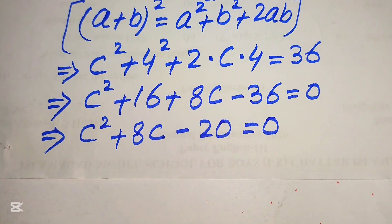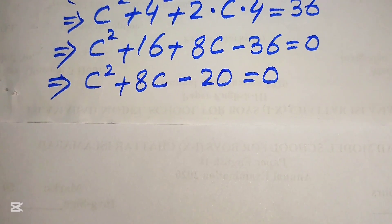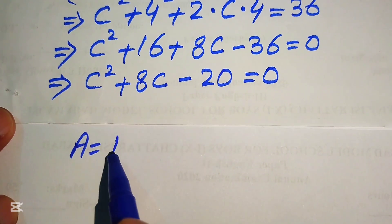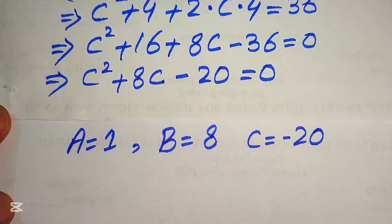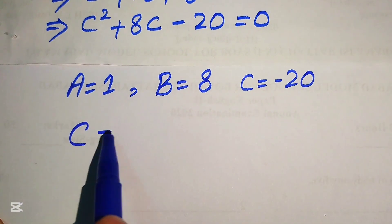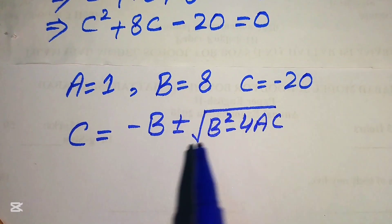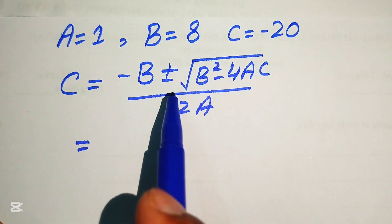This is a quadratic equation in c. We will apply the quadratic formula to solve it. The coefficients are: A equals 1, B equals 8, and C equals minus 20. The quadratic formula is: c equals minus B plus or minus square root of (B square minus 4AC), divided by 2A.